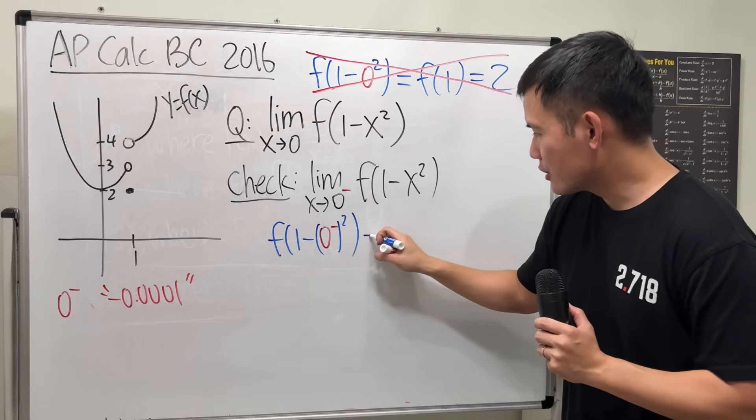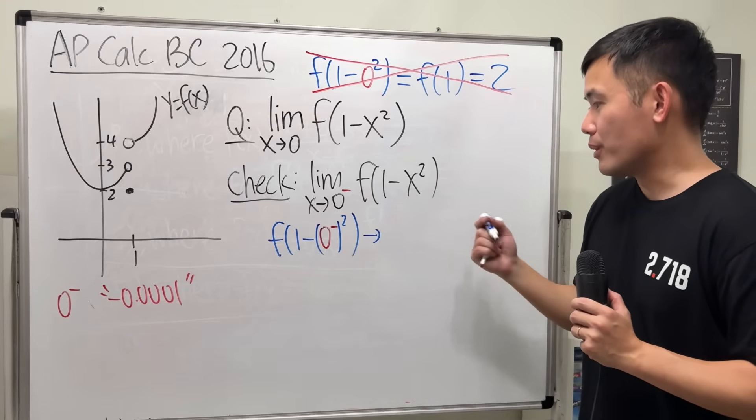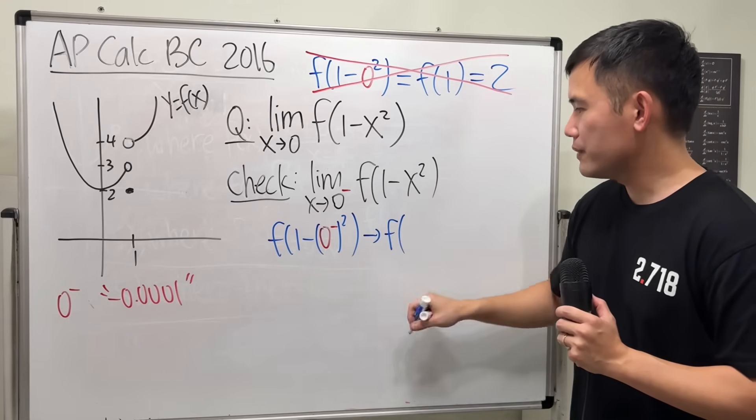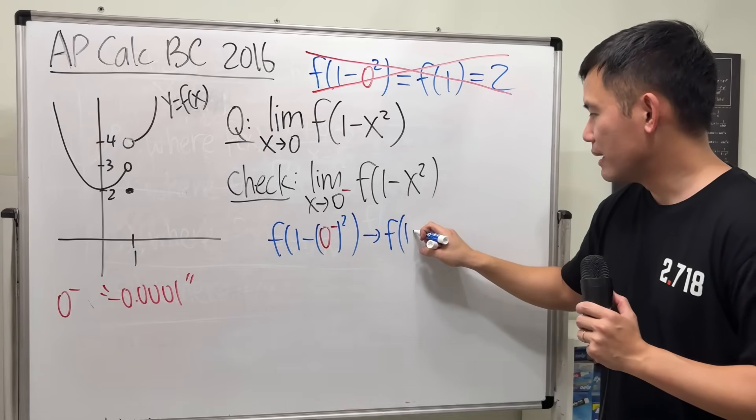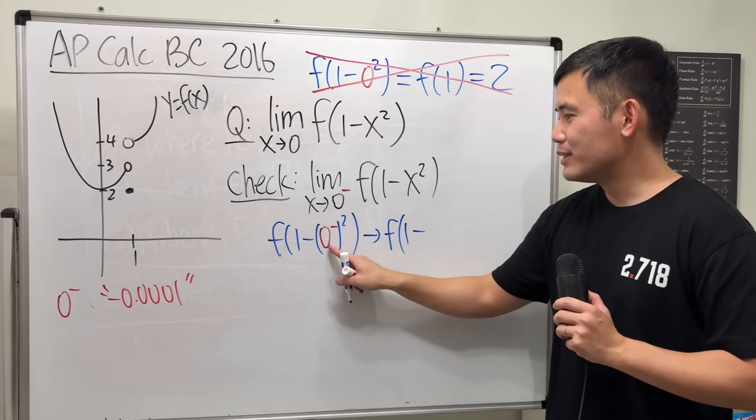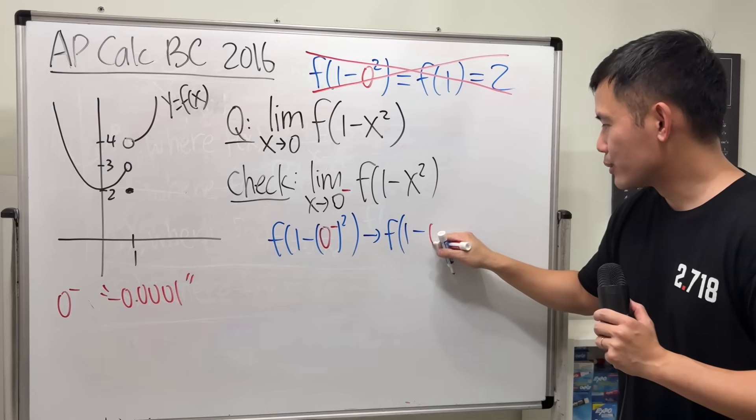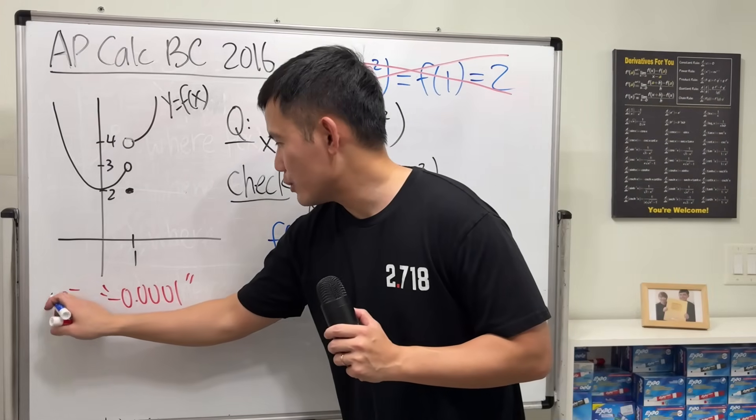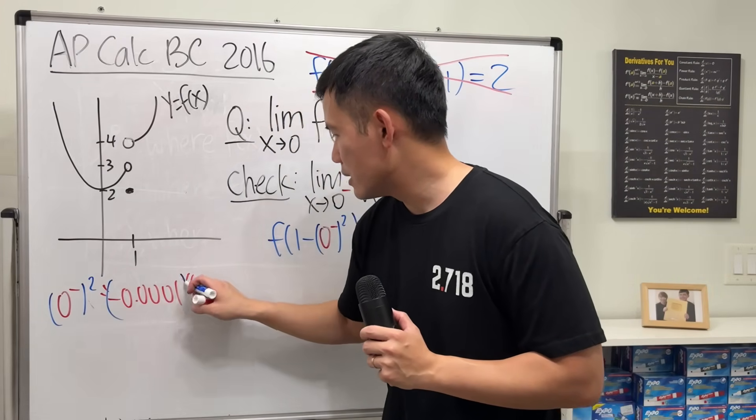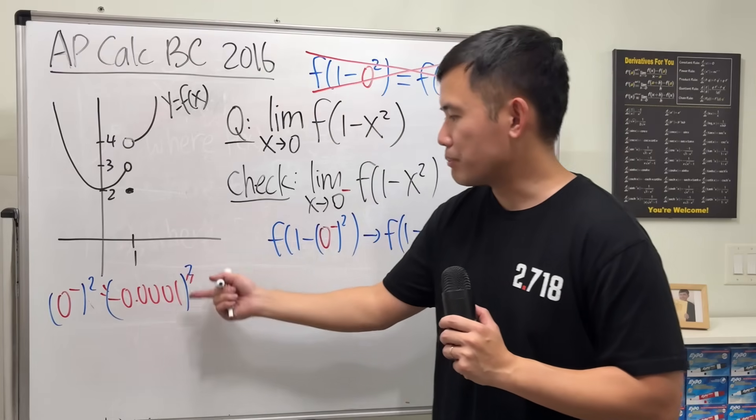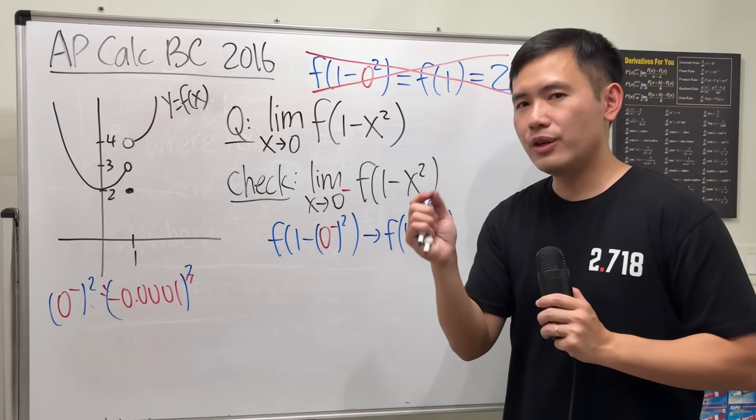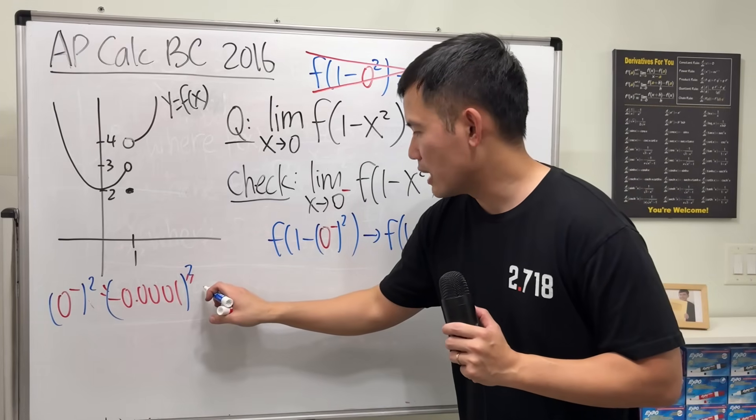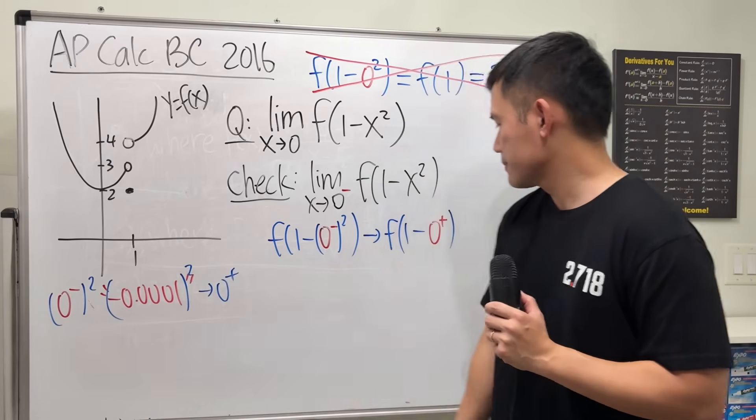You get a positive number that's a little bit bigger than 0. So, this is going to be approaching, I'm using the arrow for approaching, f(1) is still 1, minus still minus. 0⁻ squared becomes 0⁺. Again, just imagine that you have to square this. It becomes a positive number, but it's still very, very small. So, this becomes 0⁺. That's how we get that.